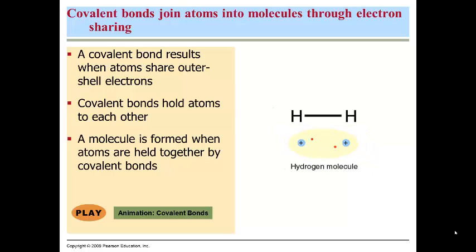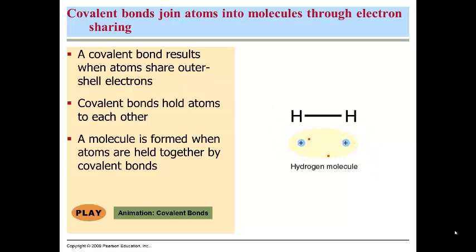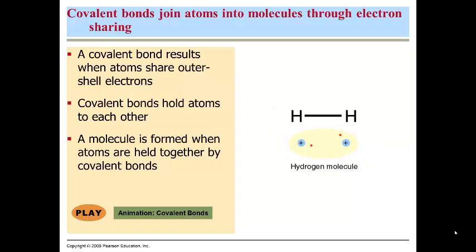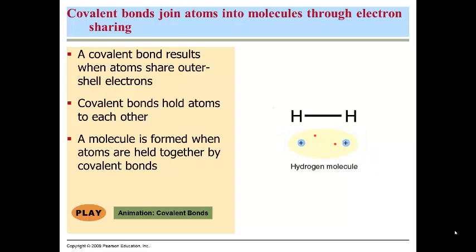What the two atoms do is share electrons so that at any given time there are always two electrons around each of the nuclei for these atoms. Part of the time the two electrons are around one of the hydrogen atoms, and part of the time around the nucleus of the other hydrogen atom. When that happens, they are bonded to each other, and because they share them, it's referred to as a covalent bond.